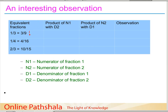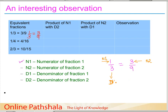We have the fraction 1 by 3 equal to 3 by 9 — this is a pair of equivalent fractions. We have defined n1 as the numerator of fraction 1. So here, 1 is n1, and 3 is n2, the numerator of fraction 2. The number 3 in the denominator is d1, the denominator of fraction 1, and d2 is the denominator of fraction 2, which is 9.